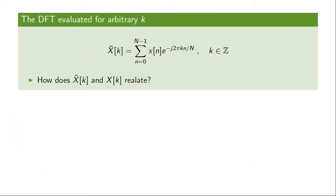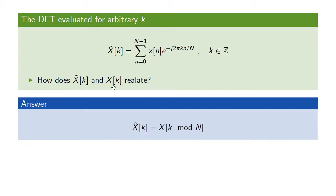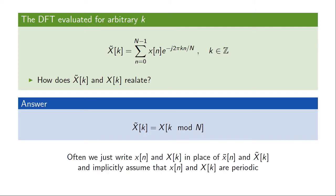The same reasoning applies to the DFT coefficients. If we define X-tilde(k) as the DFT formula evaluated at integers k not necessarily within 0 to N-1, then X-tilde(k) is simply the periodic extension of X(k). Both the time sequence and the frequency sequence can be thought of as either finite sequences with index from 0 to N-1, or as periodic sequences. We will not differentiate them with tilde notation — values read outside the range are simply the periodic extension.